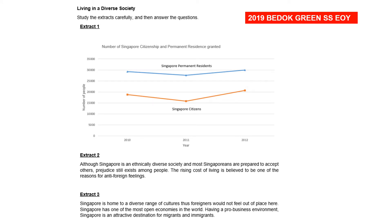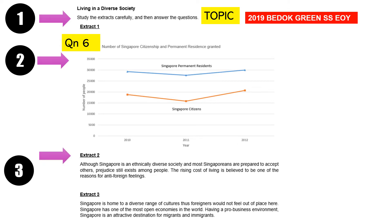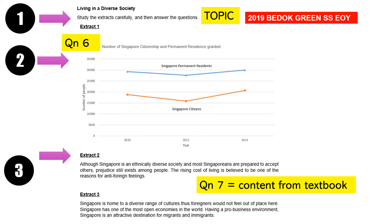Let's take a look at SRQ sample example one — the Bedok Green paper. When we look at the question paper itself, the topic is 'living in a diverse society.' Extract 1 can be a graph, a cartoon, or just words, and it is for question 6. Extracts 2 and 3 come from the textbook content and are specifically for question 7.